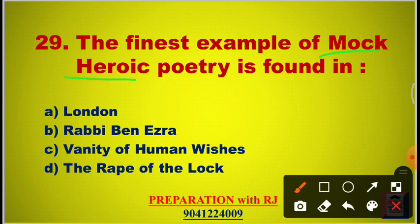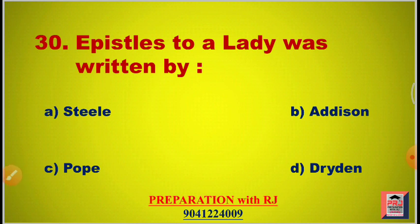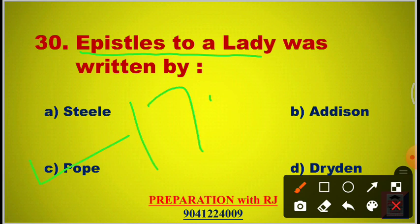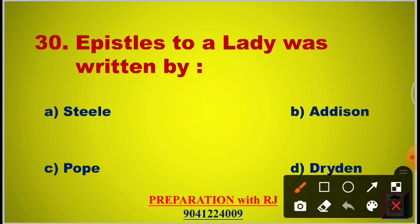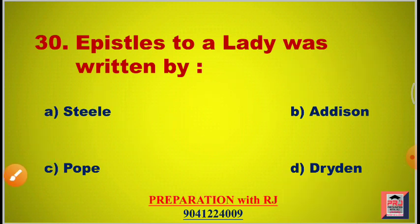The fourth epistle deals with man's relationship with happiness. These four epistles are most important. Question 29: The finest example of mock-heroic poetry is found in — options are London, Rabbi Ben Ezra, Vanity of Human Wishes, The Rape of the Lock. The answer is D, The Rape of the Lock by Alexander Pope. Question 30: Epistles to a Lady was written by — options are Steele, Addison, Pope, Dryden. The answer is C, Pope, published in 1735. The main character of this epistle is Martha.